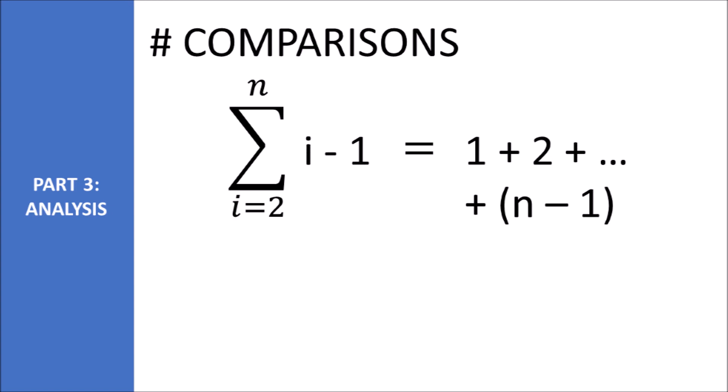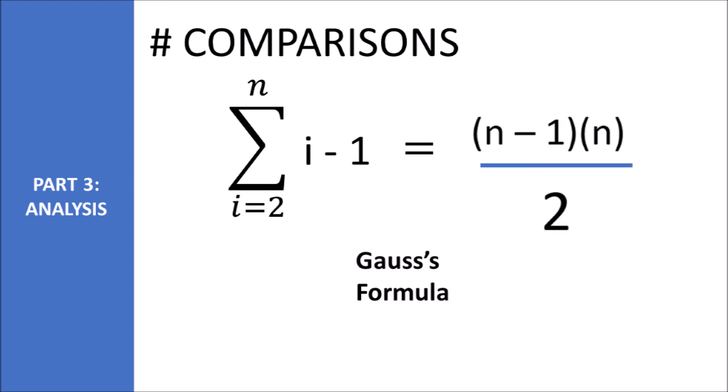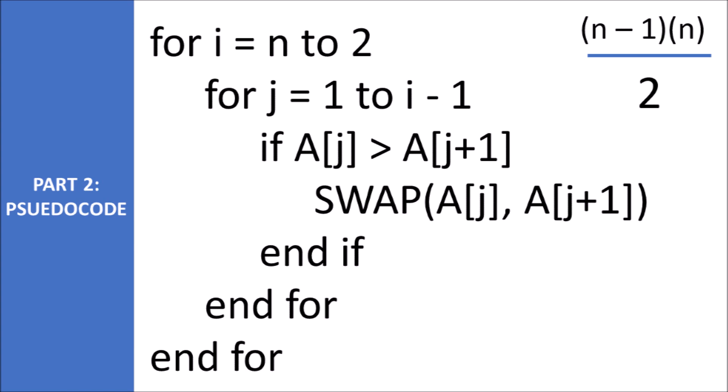This results in n minus 1 times n divided by 2. We know this because of the famous Gauss's trick. If you are unfamiliar with the trick, check out my video in the description. Carl Gauss discovered the trick as a young boy.